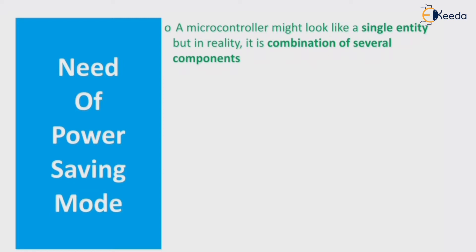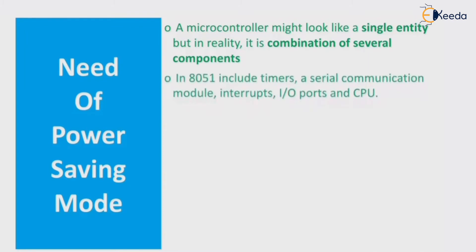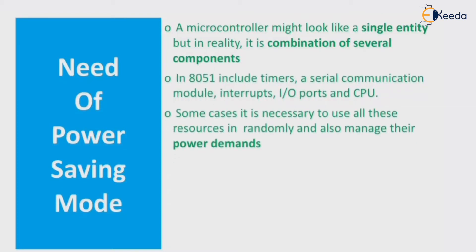Now, the need of power saving mode — why is the power saving mode used? A microcontroller might look like a single entity, but it is really a combination of several components like timer, serial communication module, interrupts, IO port, and CPU. The power demand of each part is different — for IO it is different, for the CPU it is different, for interrupts it is different, and for serial communication it is also different.